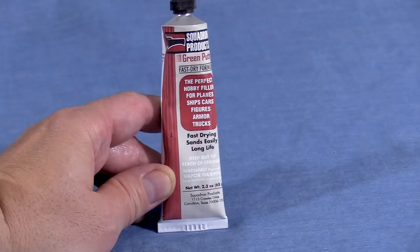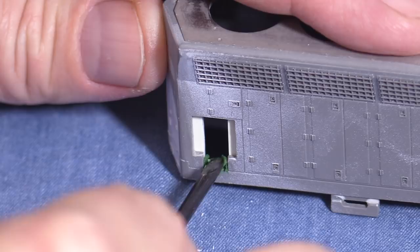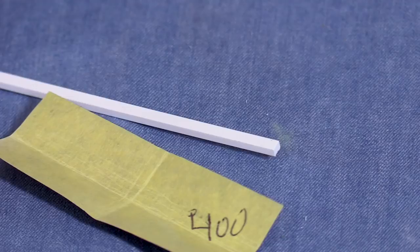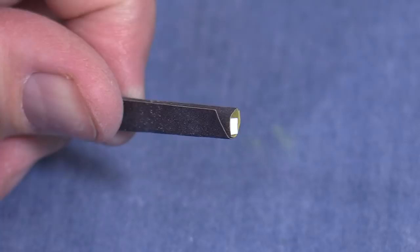I'll use a little Squadron green putty on the bottom of the opening just to make sure that the seam doesn't show. Once the putty is dry I'll give it a sanding with some 400 grit sandpaper. Sometimes it helps to get into tight places to improvise a sanding block, in this case from some strip styrene and a piece of 400 grit paper.